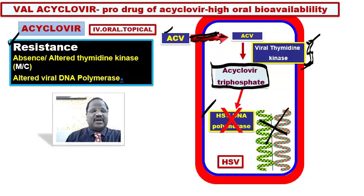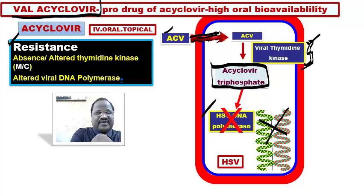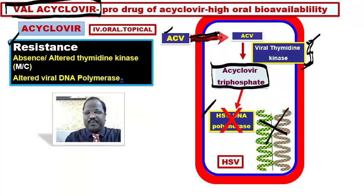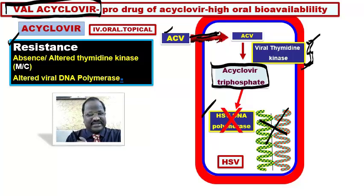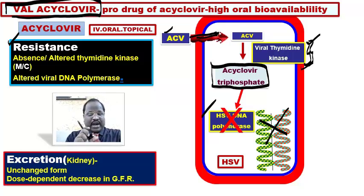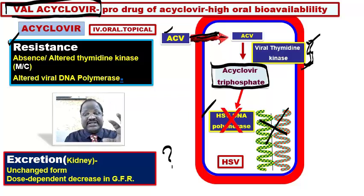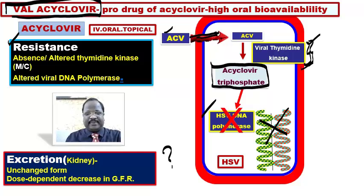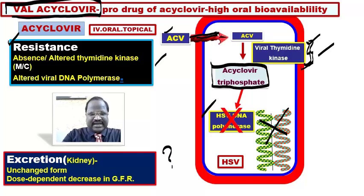Acyclovir can be used intravenously, orally, and topically. We also have valacyclovir, which is a prodrug of acyclovir with very high oral bioavailability — that is one of its best advantages. Acyclovir undergoes excretion through the kidney in unchanged form, without undergoing hepatic metabolism. This means excretion totally depends upon kidney function, so dosage adjustment is needed in kidney failure.